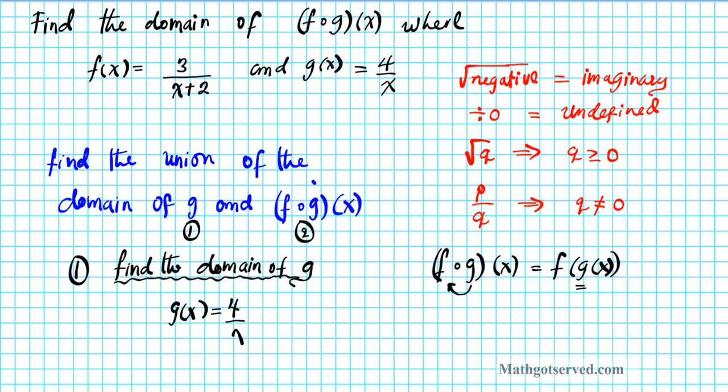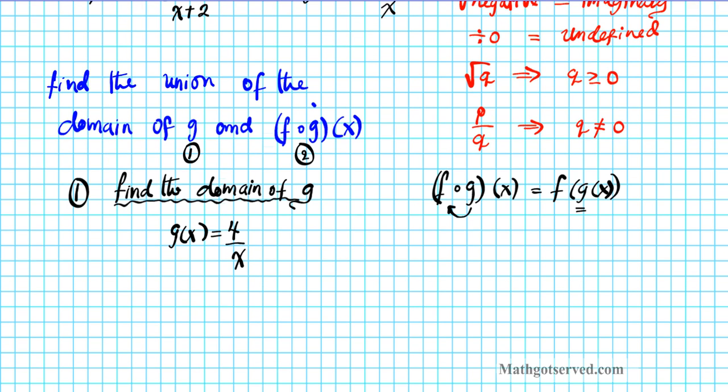Now when you're dealing with a rational function, which is a function that has a variable in the denominator, what you simply do, as indicated here, is you set the denominator equal to zero. So the denominator here is x equal to zero. So this is a restriction. This value will result in an undefined output, so x cannot be equal to zero. So this is one of the restrictions on our domain. We're done with the first part, which is finding the domain of g.